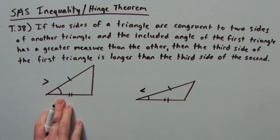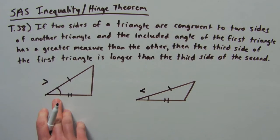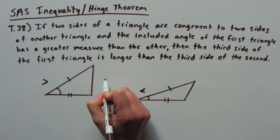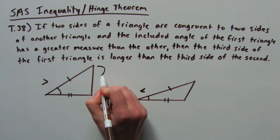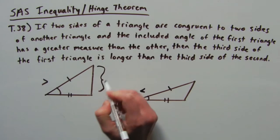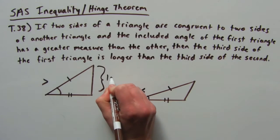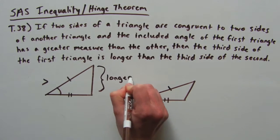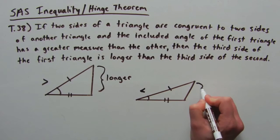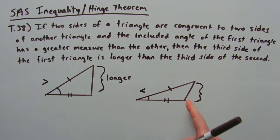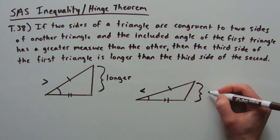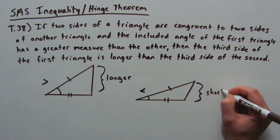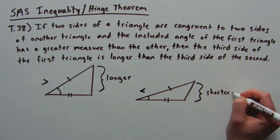This theorem says that since this has the bigger angle, then this side is the longer side. And this side, opposite the shorter angle, would be the shorter side.